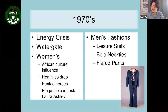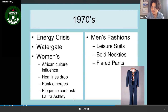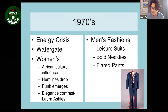Neckties came in brighter colors, and flared pants — where the bottom of the trousers flares out — became a signature 1970s look, also called bell-bottom pants.